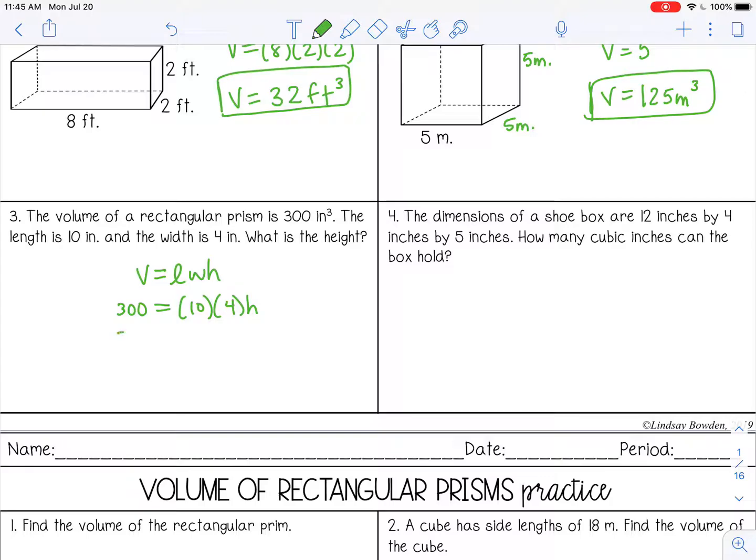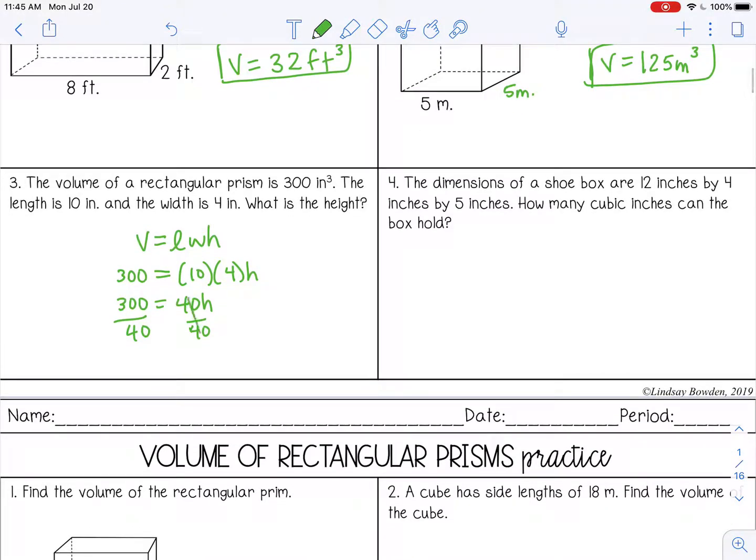All right, so I'm going to multiply 10 times four. That's going to give me 40. And then I'm trying to solve for height, so I'm going to divide by 40 on both sides. And that gives me 7.5. Now height is one dimensional, it's just a distance, so it's not going to be inches cubed, it's just inches.